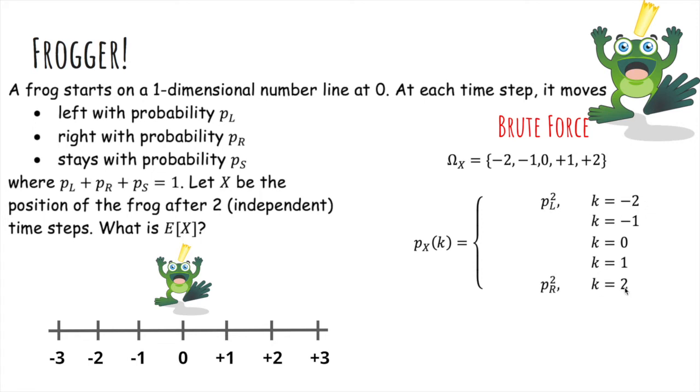Similarly, for k equals 2, you have to go right twice. For k equals negative 1, we either go left and stay, or stay and left. So we add them up, and we get 2 times this. Same for k equals 1. And if k equals 0, you either go left-right, right-left, or stay-stay.